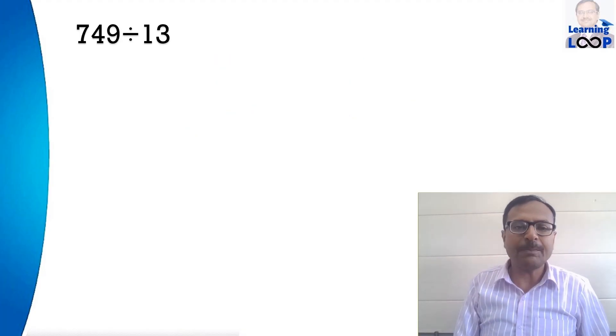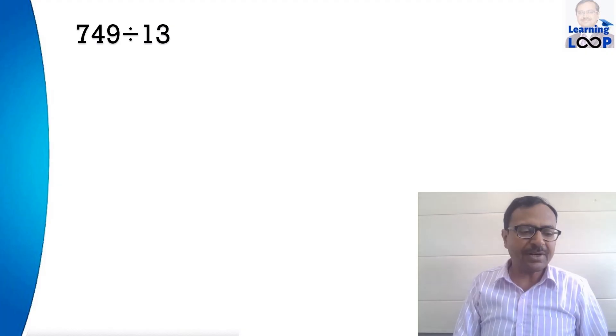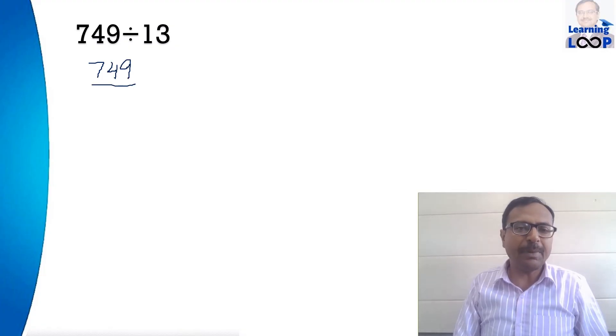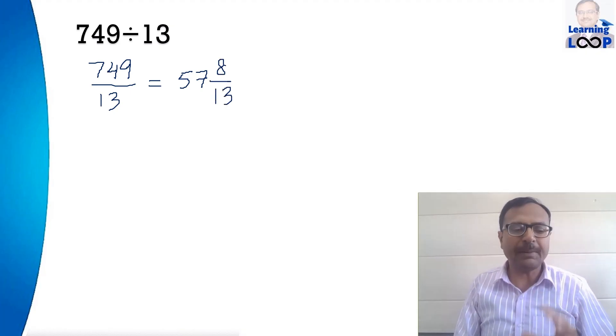Let's take the example where we have to divide a three digit number by 13. So 749 by 13. The first thing I am going to do is to convert 749 by 13 as a mixed number and I have done it for you already so that we can save time. 57 8/13 is the mixed number form of 749 upon 13.